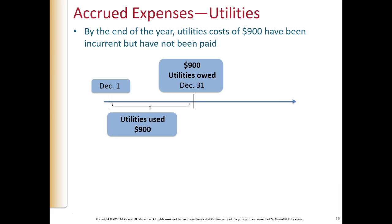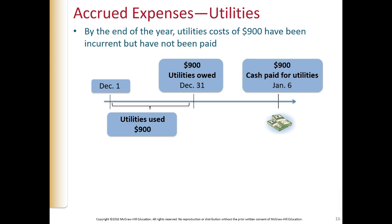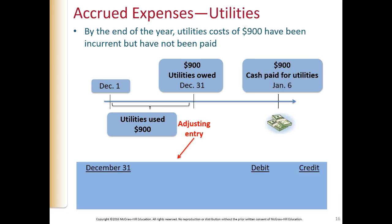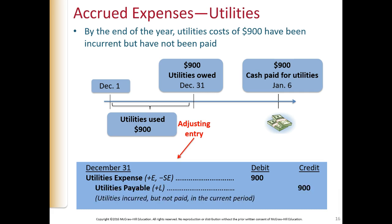Utilities is another example of an accrued expense. We get the utility bill at the end of the month — we've used utilities all through December and usually have about a week to pay it, so we will pay it on January 6th. But on December 31st, we show the fact that we've used the utilities: debit utilities expense, and show the fact we owe the money with a credit to utilities payable as of December 31st.